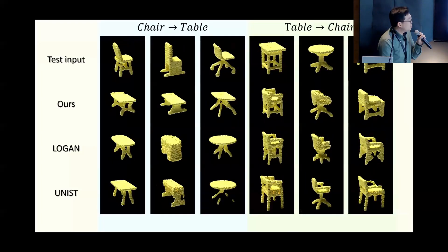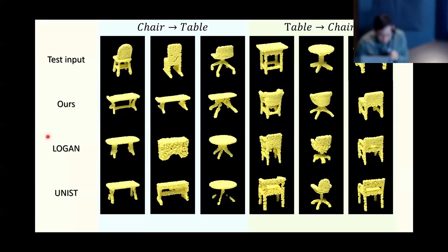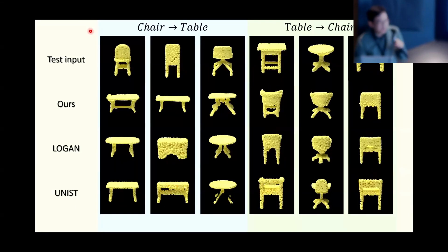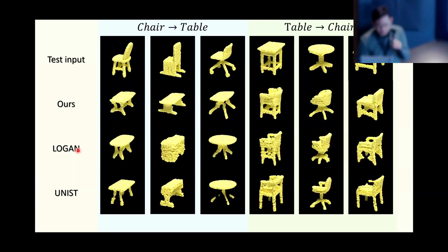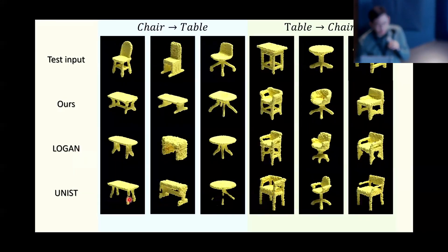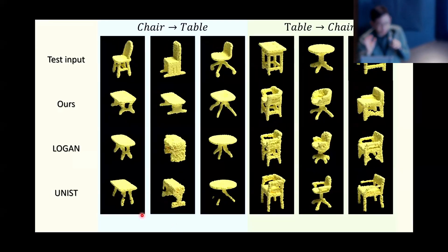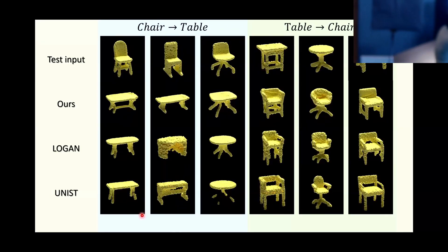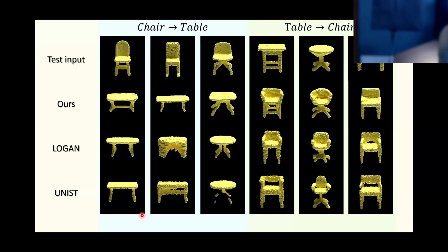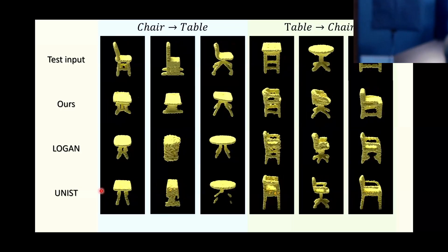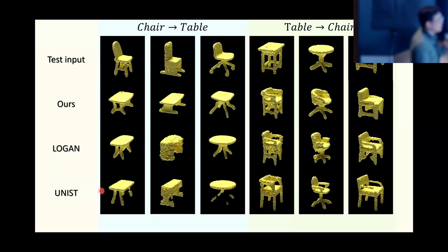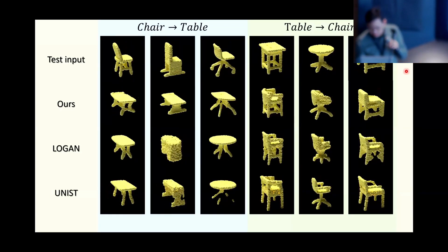Here are some results. The first row is the input data showing chair-to-table and table-to-chair. Our results are shown, along with Logan and UNIS as two state-of-the-art baselines. UNIS results are quite decent, but some thin bars or armchair details may be missing. For Logan, sometimes detailed characteristics like branches of the chair or bars between chair legs are not preserved. Our result is in the second row.